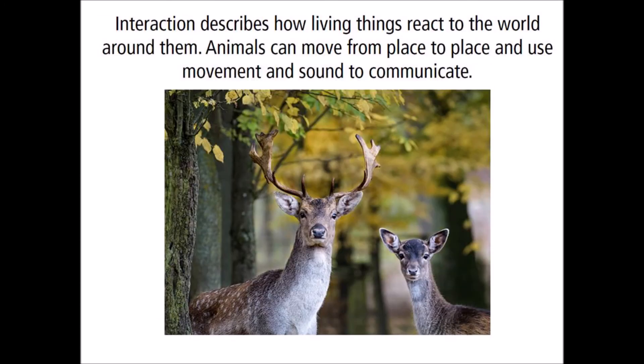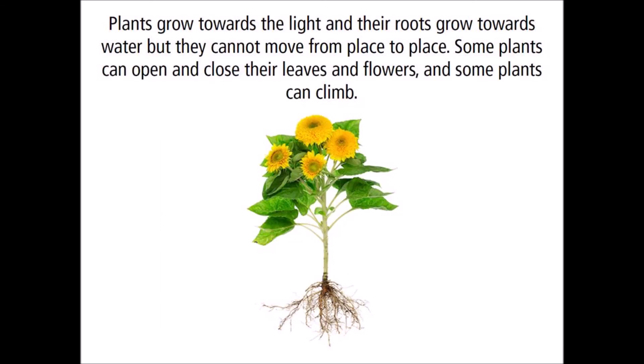Interaction describes how living things react to the world around them. Animals can move from place to place and use movement and sound to communicate. Plants grow towards the light and their roots grow towards water, but they cannot move from place to place. Some plants can open and close their leaves and flowers, and some plants can climb.